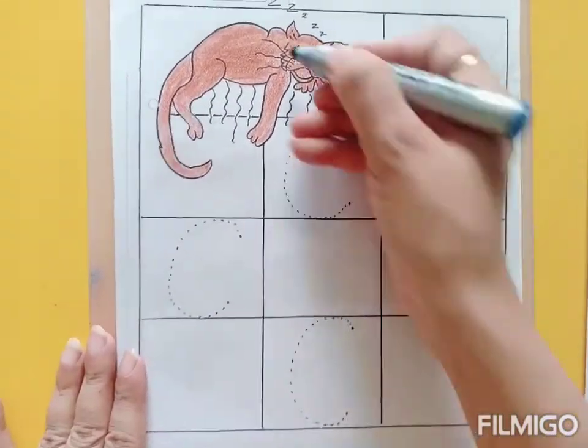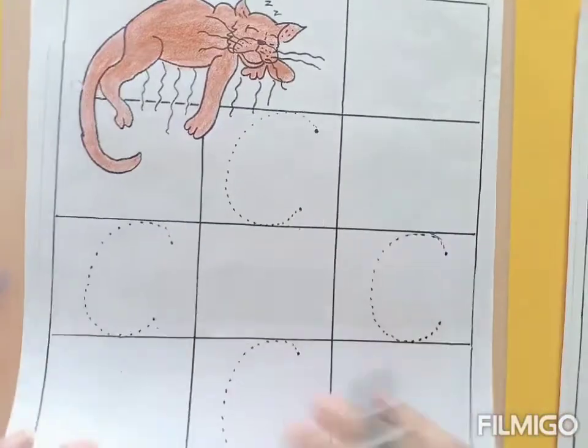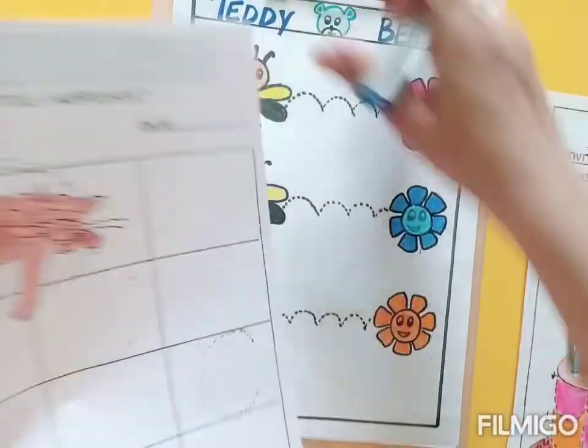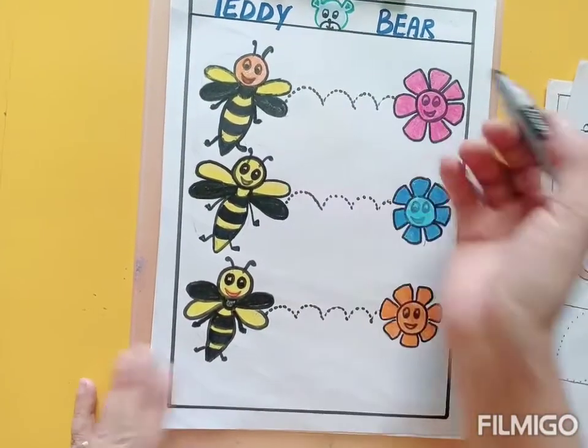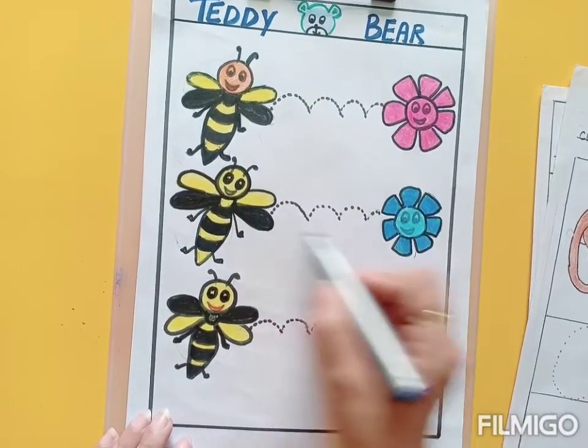Similarly, this like catty is sleeping. So see, the child is going to join the dots, dotted pattern here. You can give any two pictures to join, but now it is not with the help of a straight line,